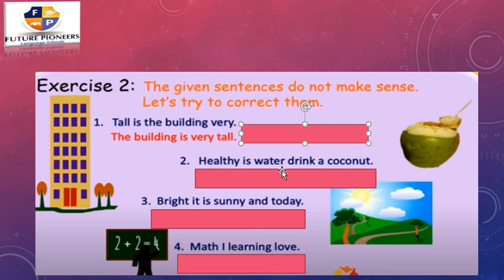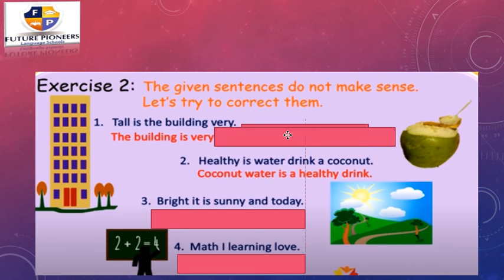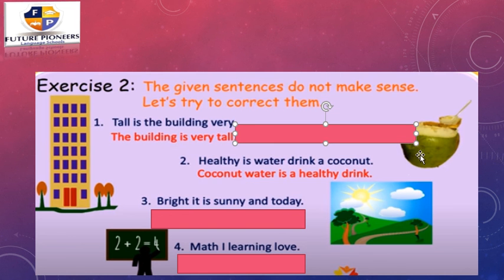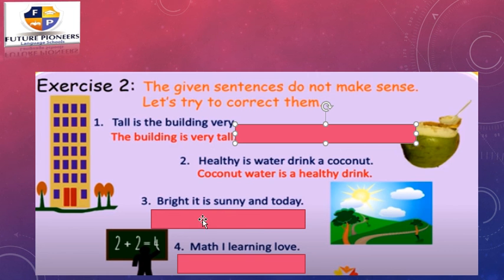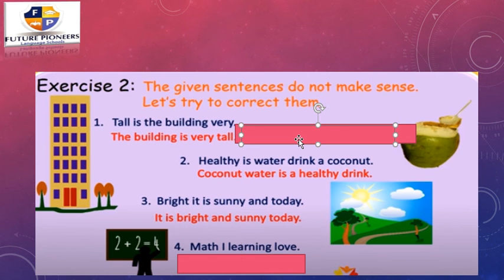What about: 'healthy is water drink coconut'? It doesn't make sense — let's put them in the correct order: Coconut water is a healthy drink. Coconut has some water and this water is so healthy. Now it gives us a complete thought and makes sense. 'Coconut water' is the subject and 'is' is the verb. Next: 'bright, it is sunny today' — rearranged to: It's bright and sunny today. This is a sentence. 'It' is the subject and 'is' is the verb. It begins with a capital letter and ends with a period.